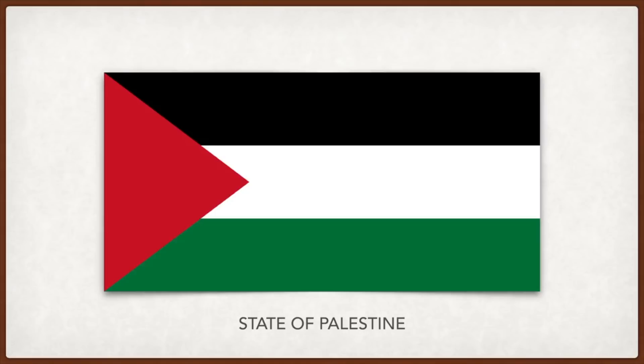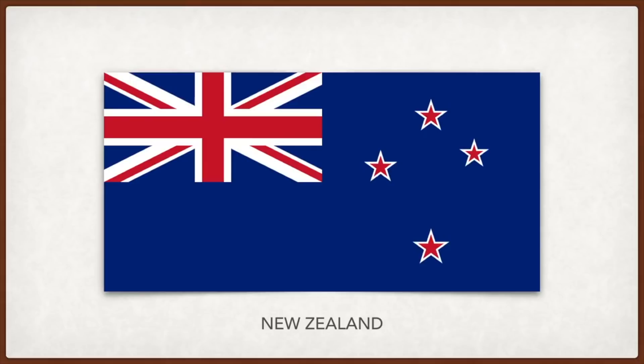Palestine has come to symbolize statehood for the Palestinian people — black for oppression, red for the blood spilled by Palestinians, and white for peace. New Zealand: the flag of the United Kingdom shows New Zealand's history with Britain, and the Southern Cross is a national symbol for Southern Hemisphere nations. The red was traditionally symbolic of mana — supernatural power and high status — for the Maori, the aboriginal people of New Zealand.